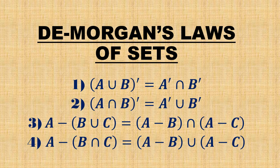Let us see De Morgan's laws and how to prove them in set theory. If you have (A union B) complement, it is nothing but A complement intersection B complement. When complement comes, union will be changing to intersection and intersection will be changing to union — that is what you need to remember.